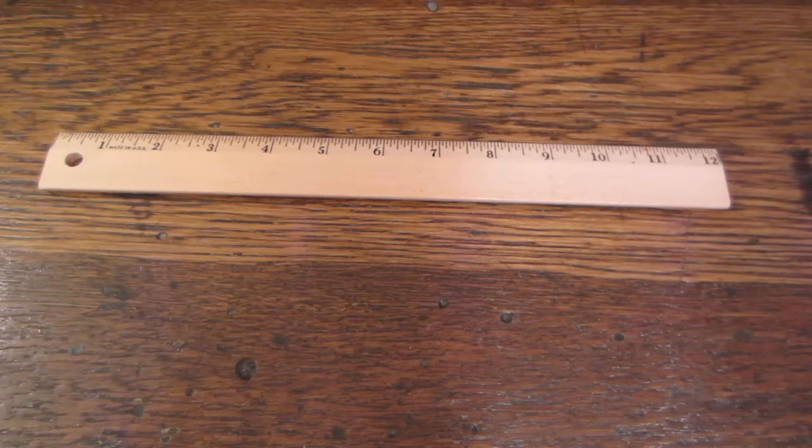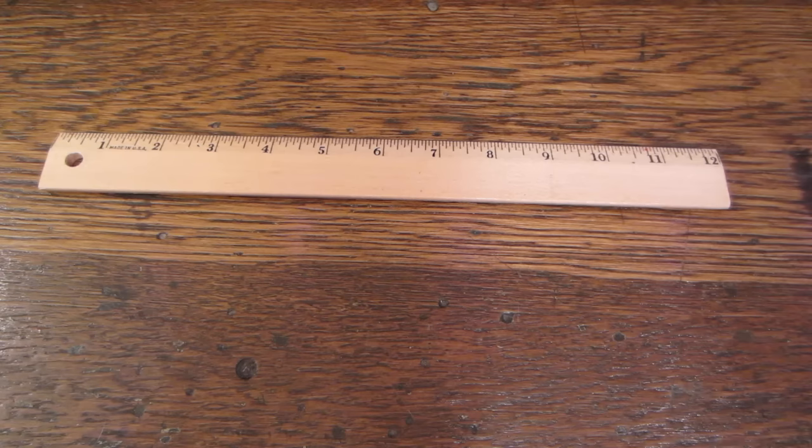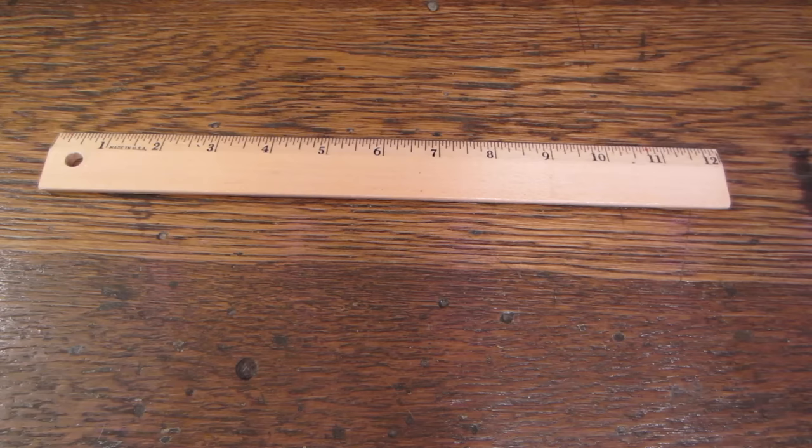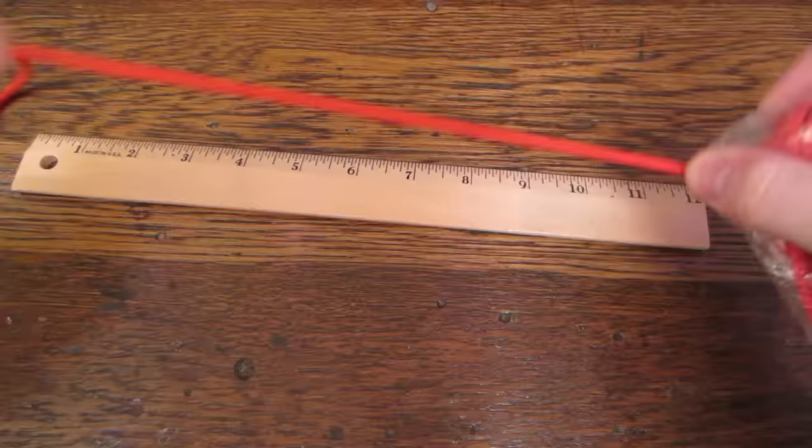So to start we're going to measure out the length of cord we need. Other tutorials generally say you need about a foot for every inch of the weave that you create, and I said that myself in past tutorials. From what I've come to learn is that that's a bit generous and that's fine. You'd rather have too much cord than too little. So my wrist is about seven inches in circumference, so I'm going to measure out about nine feet of cord just to be safe.